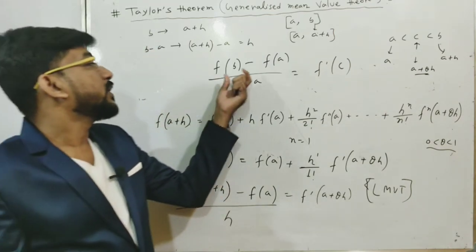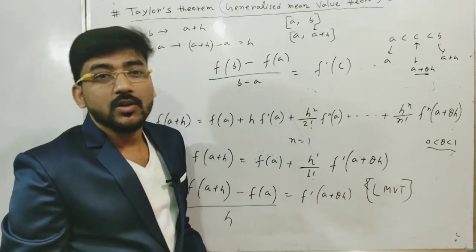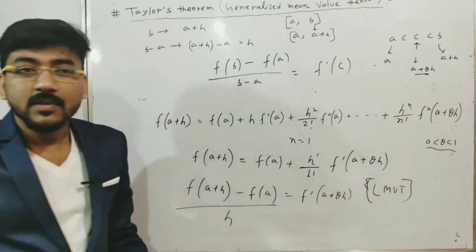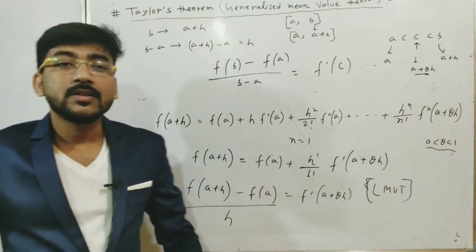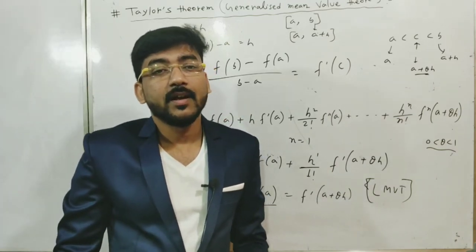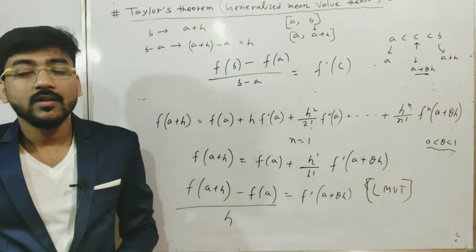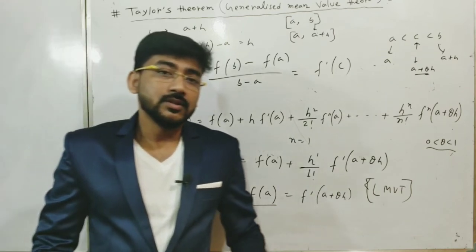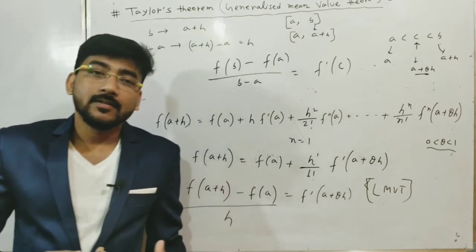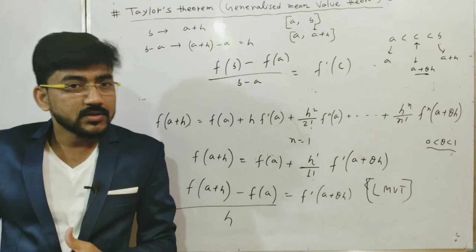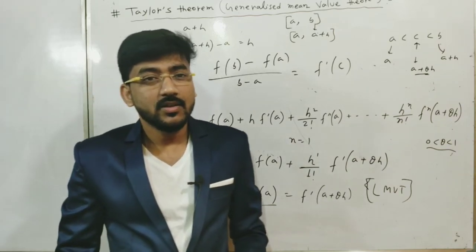And if we put f(b) = f(a), we reach Rolle's theorem. So overall, Taylor's theorem is the generalized mean value theorem, and all others can be derived from it. In the next class, we will discuss Maclaurin's theorem, Maclaurin's series, and Taylor's series.